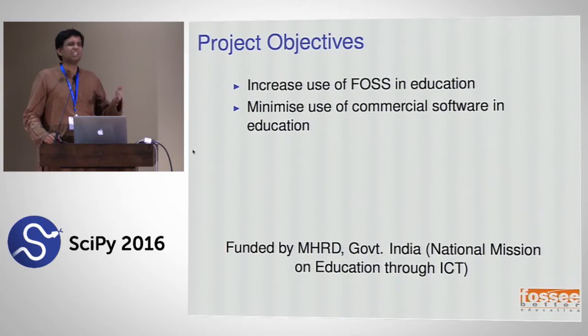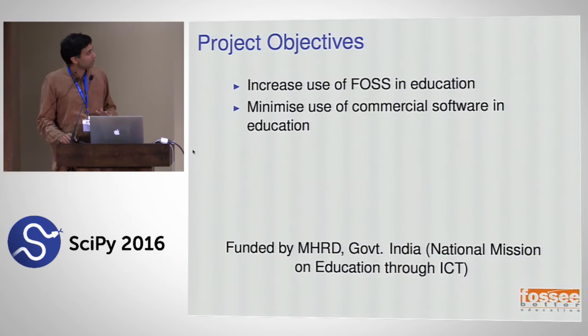A lot of acronyms, I know. But NPTEL is kind of like MIT's OCW — they have about 900 courses online that you can view from anywhere, with the goal of improving education quality in India. One part of this massive mission was to also try to eliminate or minimize the use of commercial software in higher education specifically. FOSI — Free Open Source Software in Science and Engineering Education — is one project under that umbrella, now expanded to just education.